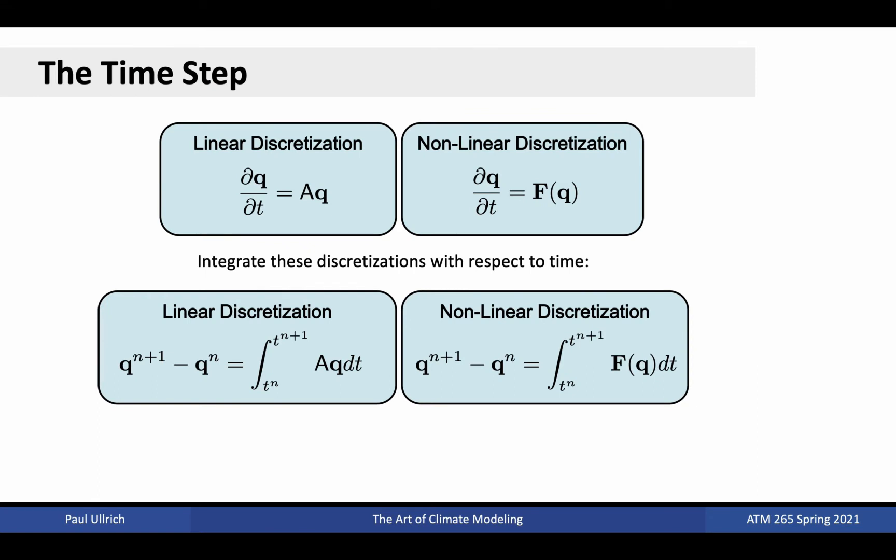With that in mind, let's start to look at the simplest of these approximations. The linear discretizations just discussed appear here in the top left box. More generally, for nonlinear differential equations, we might have a discretization like the one in the top right. The quantity f is known as the time tendency of the state q since it encapsulates the rate of change in time of q. Integrating these discretizations with respect to time allows us to convert them from differential form into integral form. By fundamental theorem of calculus, the integrated time derivative simply becomes the difference between the values of q at the end and beginning of the time step.